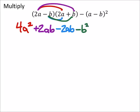And what's great about these is these two cancel out, so we really just have 4a squared minus b squared.